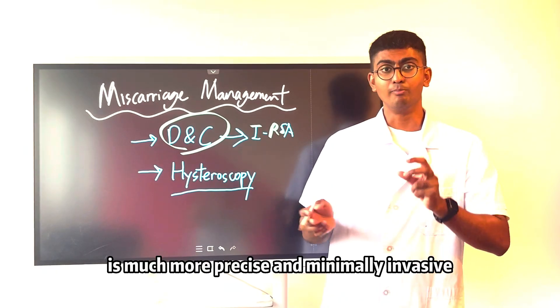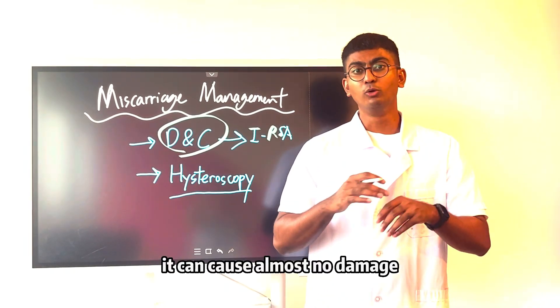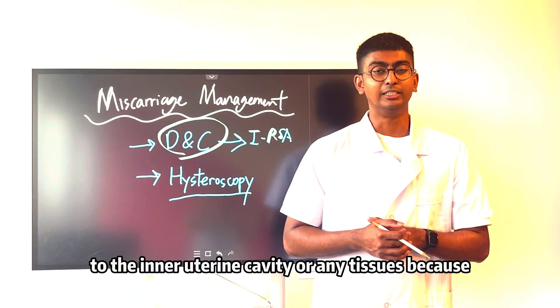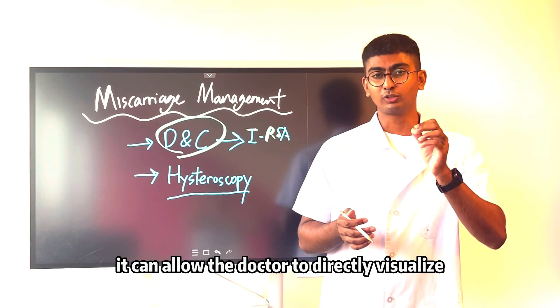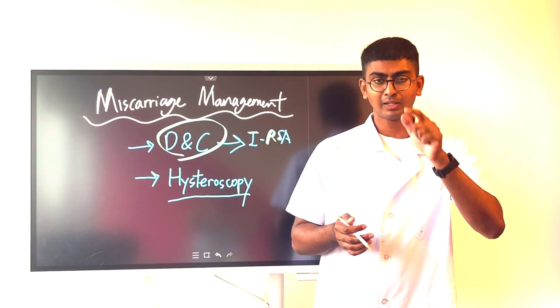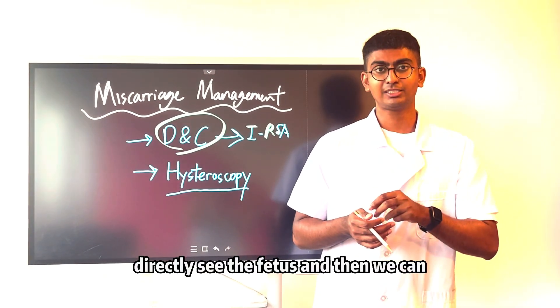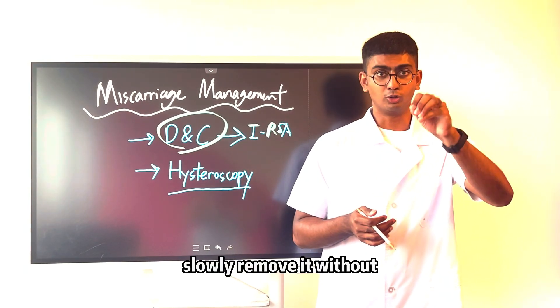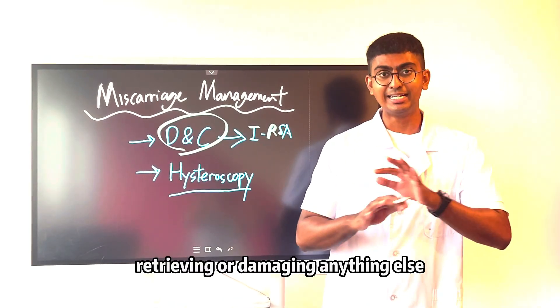Hysteroscopy is much more precise and minimally invasive. It can cause almost no damage to the inner uterine cavity or any tissues because it allows the doctor to directly visualize, directly see the gestational sac, directly see the fetus and then we can slowly remove it without retrieving or damaging anything else.